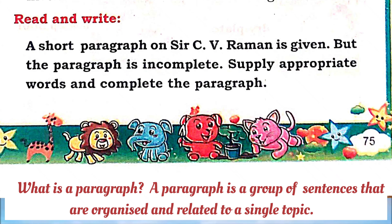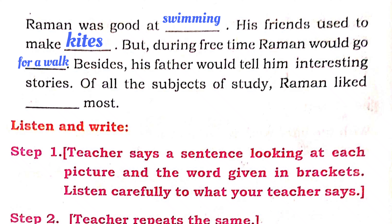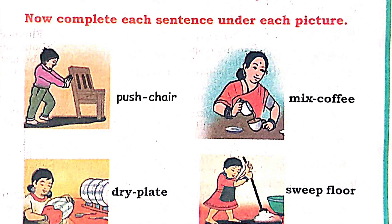A short paragraph on Sir C.V. Raman is given, but the paragraph is incomplete. Supply appropriate words and complete the paragraph. Raman was good at swimming. His friends used to make kites, but during free time Raman would go for a walk. Besides, his father would tell him interesting stories. Of all the subjects of study, Raman liked physics most.